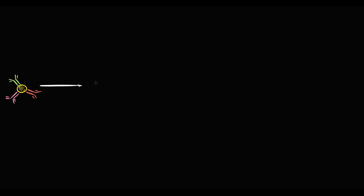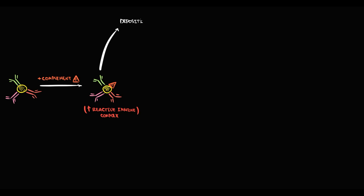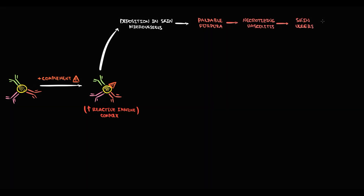When immune complexes appear in the bloodstream, they bind complement, forming a massive, highly reactive immune complex. Deposition of immune complexes in skin microvessels provokes palpable purpura. In severe cases, this can cause necrotizing vasculitis resulting in ulcer formation.